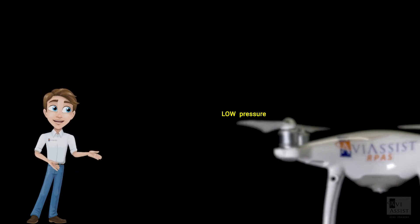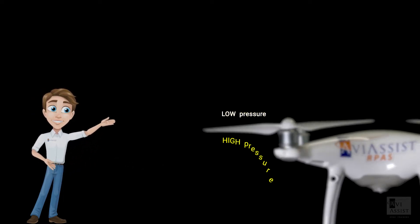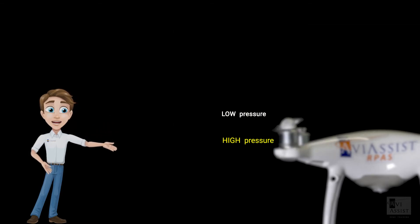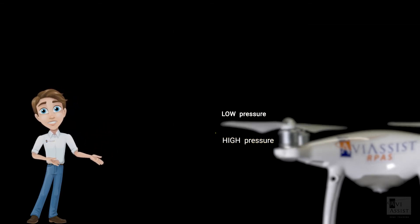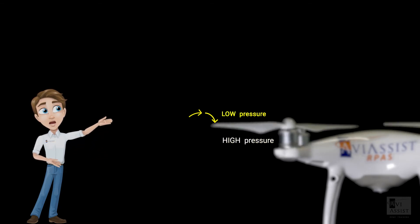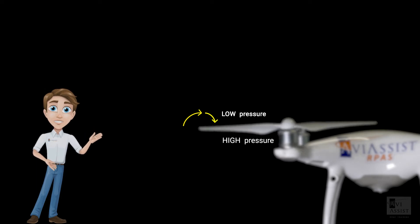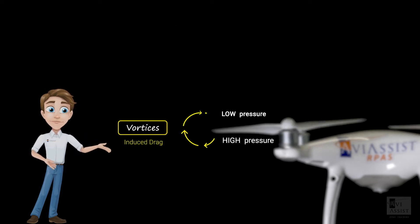During the flight, there is a lower pressure region on top of the multirotor blade and a higher pressure region below the multirotor blade. Airflow naturally wants to travel from an area of higher pressure to an area of lower pressure. The pressure differential creates vortices, known as induced drag.